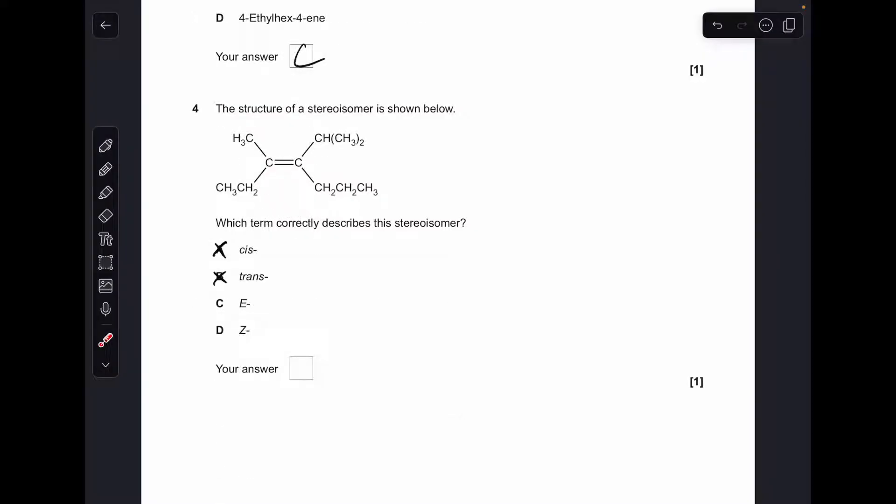Question four, I've ruled out cis and trans straight away because we don't have an identical group on each carbon of the double bond, so we can't have cis trans. We're looking for the priority groups on each carbon. On the left hand carbon it's this ethyl group. Moving on to the right hand carbon, it's a little bit tricky this one. I've expanded the groups just to help explain this. This carbon here is bonded to hydrogen and two carbons, so in terms of atomic number one six six, whereas on this one, this carbon is bonded six and a one and a one. That one's got the biggest atomic numbers directly attached, so that has priority. They're on opposite sides of the double bond, so that makes it the E isomer. C is the right answer.